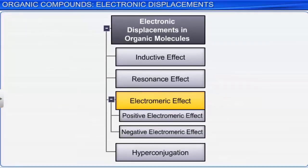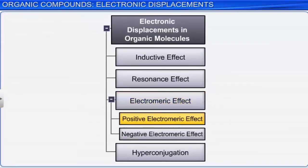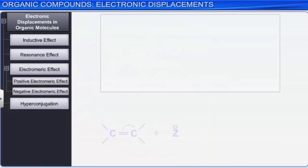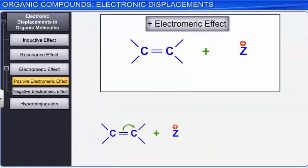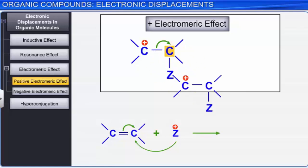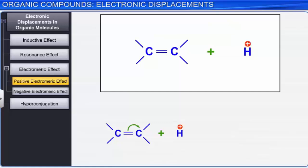There are two types of electromeric effects: positive and negative. In the positive electromeric effect, the pi electrons of the multiple bond are transferred to the atom to which the attacking reagent gets attached. For example, in the addition of acids to alkenes, the pi electrons of the double bond are transferred to the carbon to which the attacking reagent is bonded.